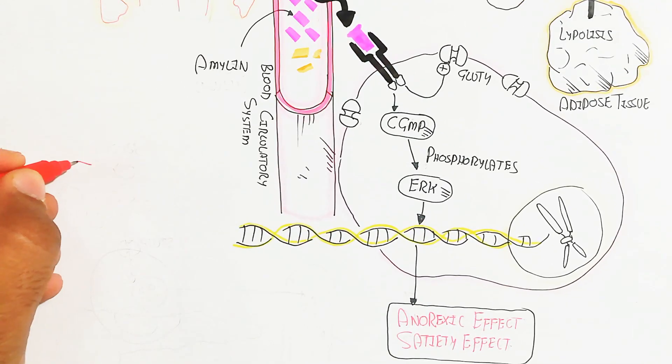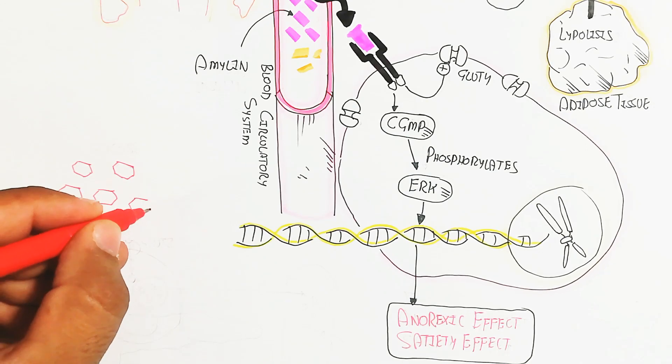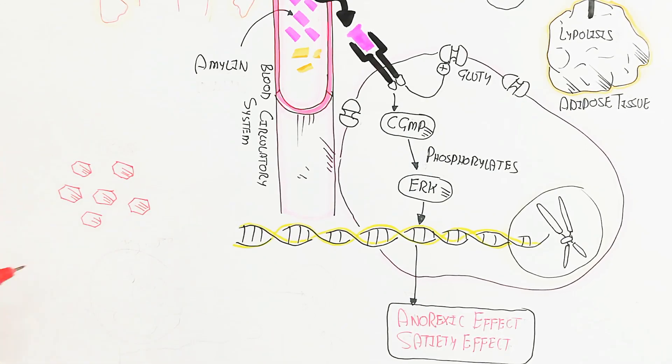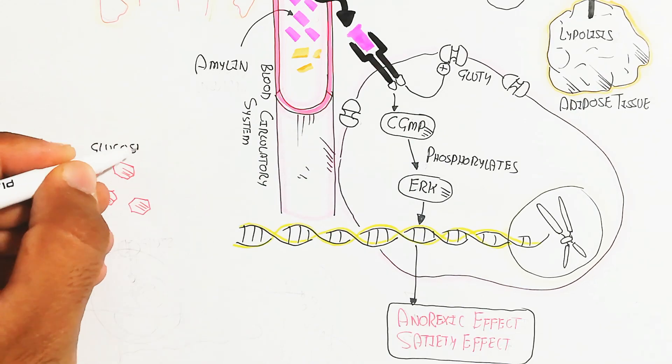This leads to anorexic effect, the satiety effect, by giving signals to the cell that activate the mTOR pathway, glucose uptake, and other processes that lead to satiety in every tissue.